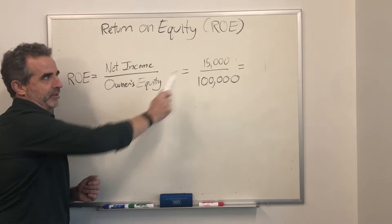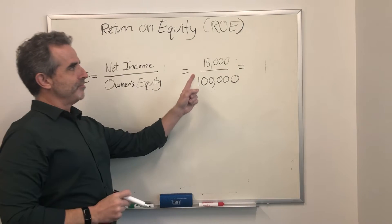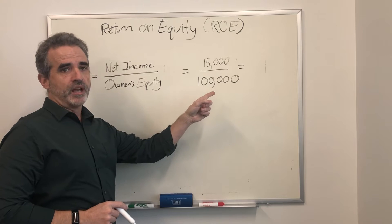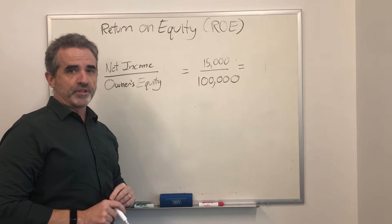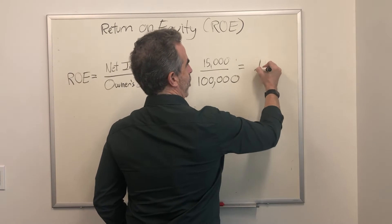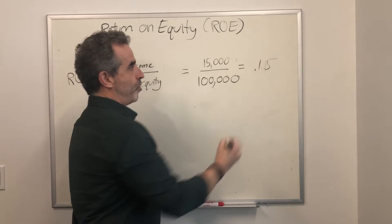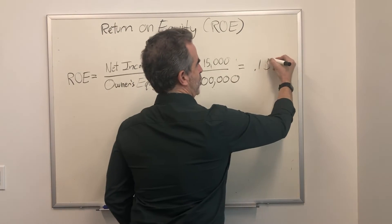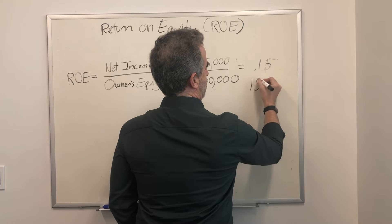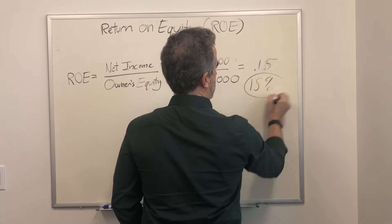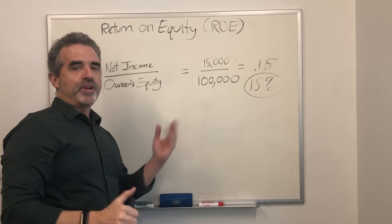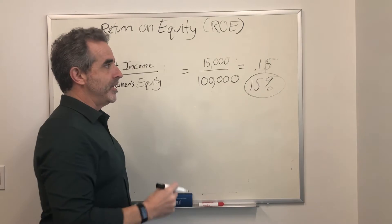In this example, I've got $15,000 in profit being divided by $100,000 in owner's equity. Right off the bat you're getting a 0.15 ratio — convert that into a percentage and you're getting a 15% return on your operations, which sounds pretty good.